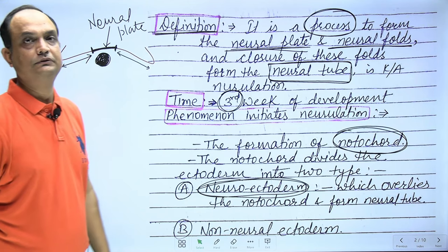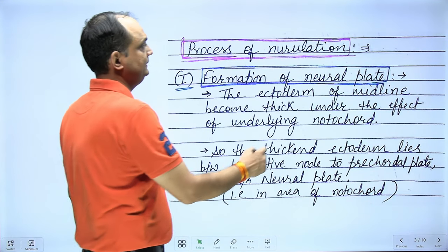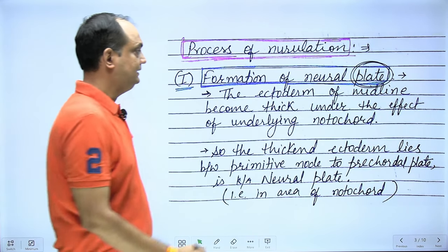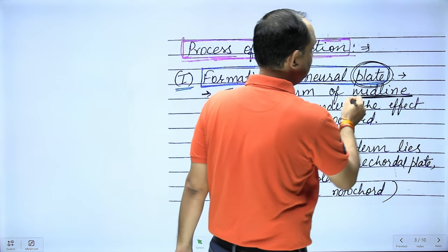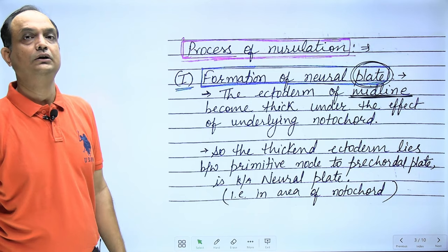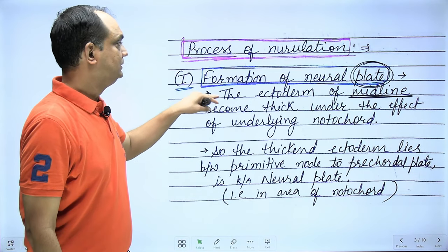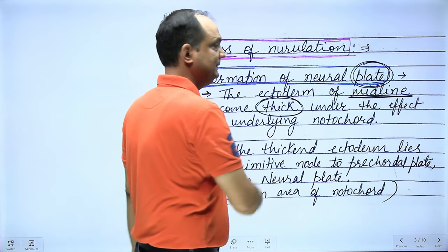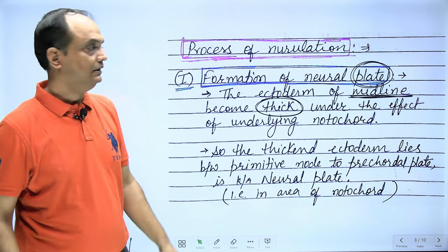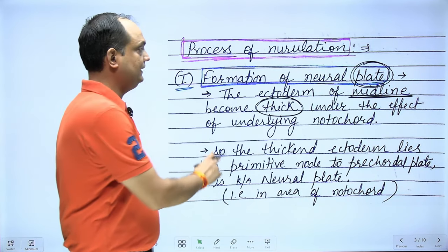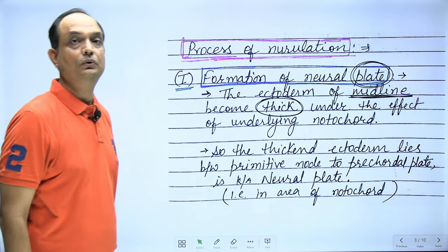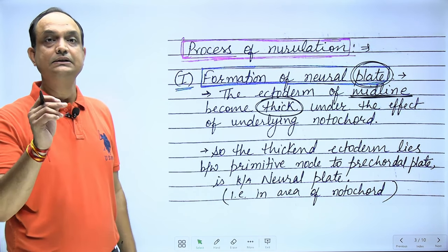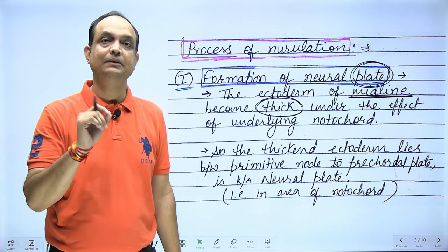Now let us discuss the process of neural tube formation. First, there is formation of the neural plate in the midline, because it is the ectoderm overlying the notochord, and the notochord is a midline structure. The ectoderm of the midline becomes thick — this thickened epithelium under the effect of the notochord is known as the neural plate.